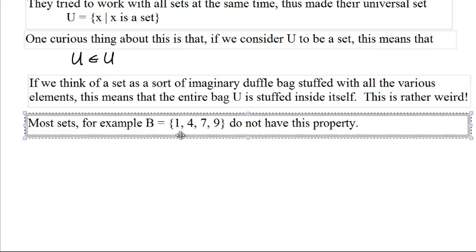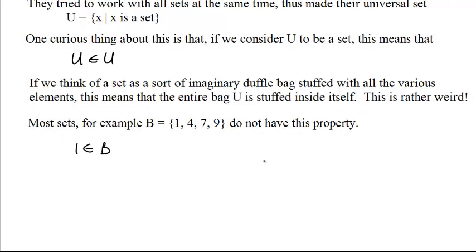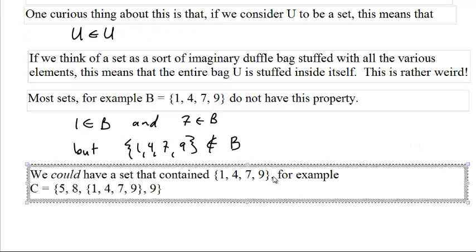Take the set B containing 1, 4, 7, and 9. It has four elements: 1, 4, 7, and 9, and that's it. 1 is in B, and 7 is in B. But the whole set containing 1, 4, 7, and 9 is not one of those four things. It's not 1, it's not 4, it's not 7, it's not 9. Now this thing could be in a set.